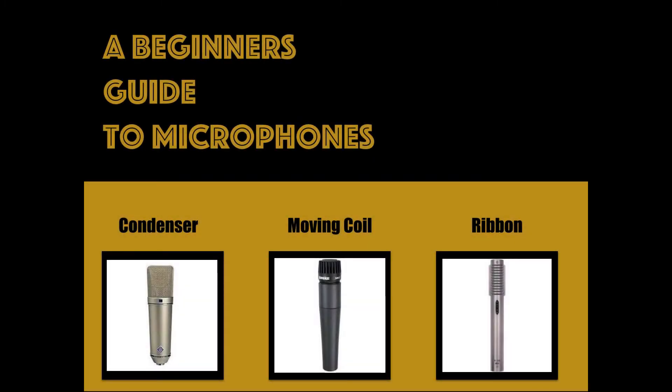My name is Jake and in today's video we are going to take a look at the difference between dynamic and condenser microphones. I will explain how they work, the different variations of each category, and why you might use either one. Microphones are the primary tool of recording acoustic instruments, and understanding how they work and when to use a specific type can greatly help the quality of your recordings.